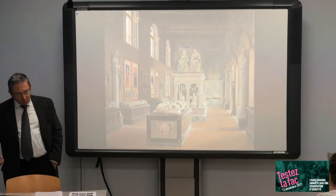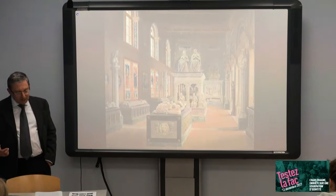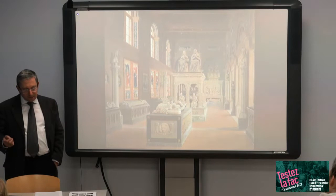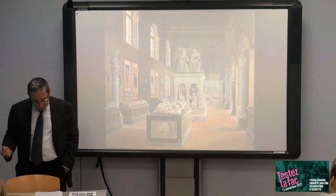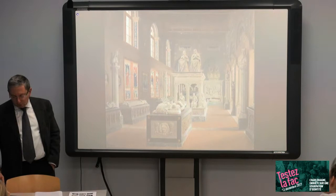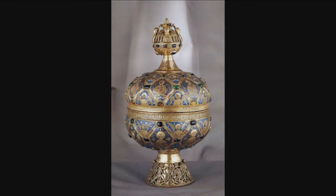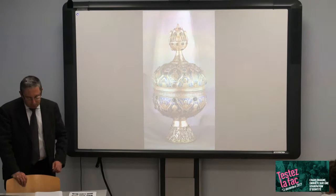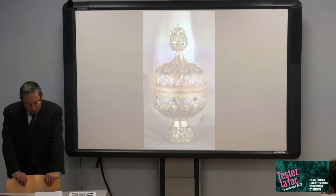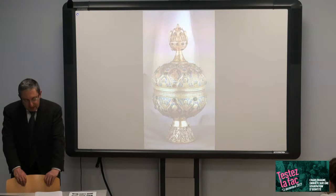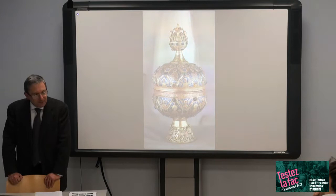Les trésors conservent en effet les ministéria et les ornamenta. Les ministéria, c'est-à-dire les objets nécessaires à l'exercice du culte catholique. Les ornamenta sont ceux qui lui donnent son faste. Notre statuette n'est ni un calice, ni une patène, ni un ciboire — rien donc d'indispensable. Notre statuette fait donc partie des ornamenta. La chance semble nous sourire car nous possédons une importante série de documents qui concernent le trésor de la cathédrale de Metz.